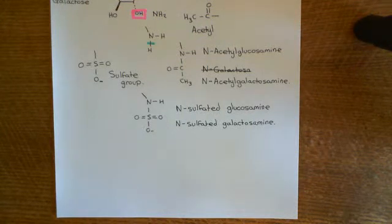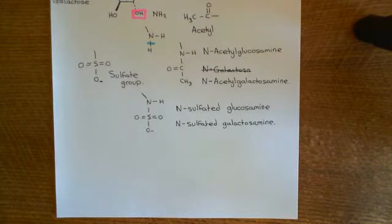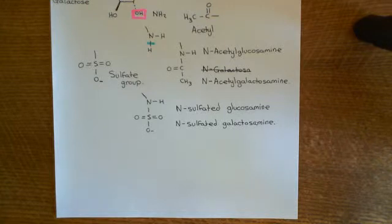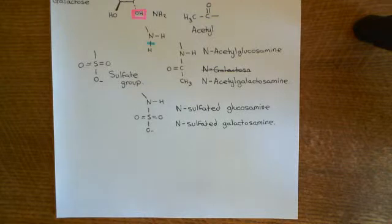Welcome to this next video in which we're discussing antithrombin-3 and heparin. We are now discussing the structure of heparan sulfate, which is a polysaccharide on the surface of endothelial cells, to which antithrombin-3, created in the liver, can bind and become activated. It can then inhibit thrombin 9a, 10a, 11a, and 12a, and stop the coagulation process from happening within a healthy blood vessel.